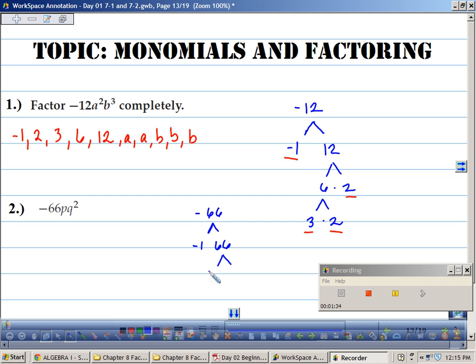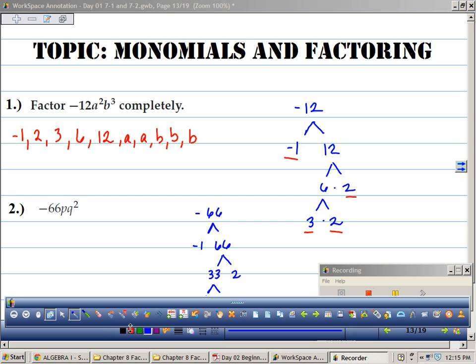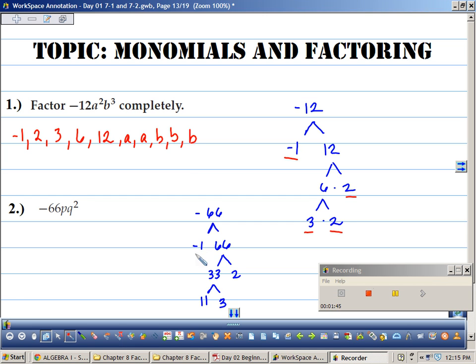Then what, Elgin? 33 times 2. Good. And how could I break up 33? 11 and 3. So negative 1 times 11 times 3 times 2. Sometimes these are a little more confusing when the trees go in this direction. But does everybody see that? Negative 1 times 11 times 3 times 2 makes negative 66.